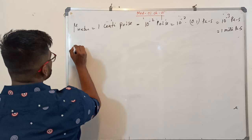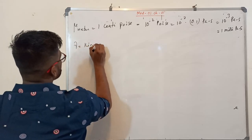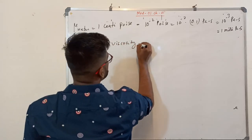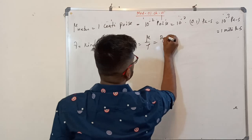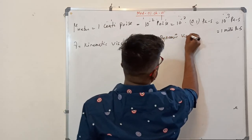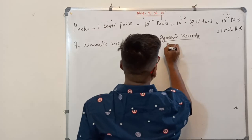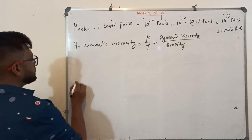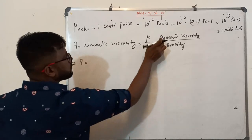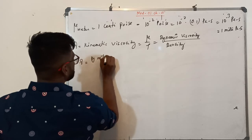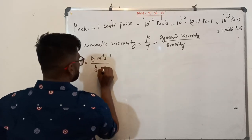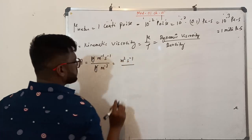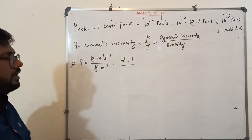Then we studied kinematic viscosity. Kinematic viscosity is defined as mu divided by rho — that is, dynamic viscosity divided by density. This implies its unit equals kg·m⁻¹·s⁻¹ divided by kg·m⁻³. Kilograms cancel, giving meter squared per second. So the unit of kinematic viscosity is meter squared per second.